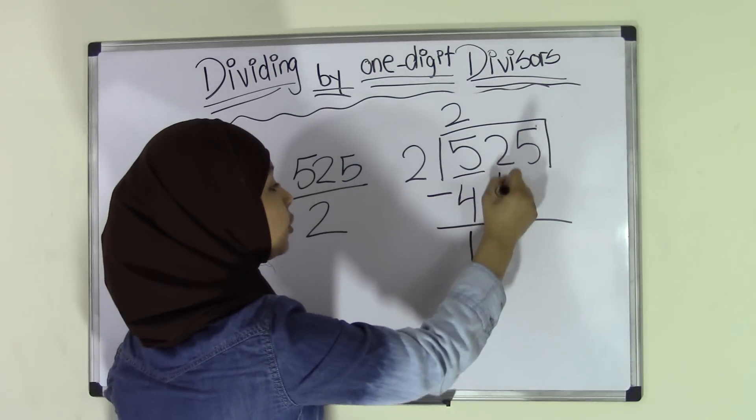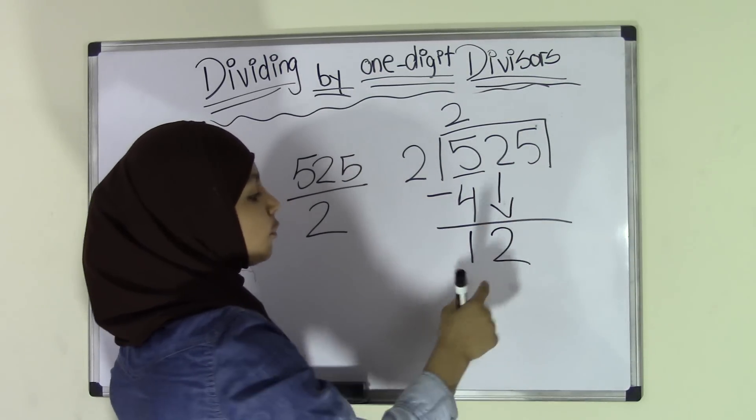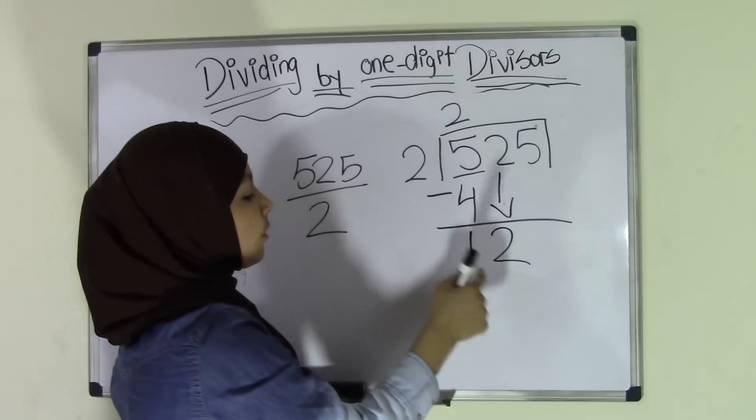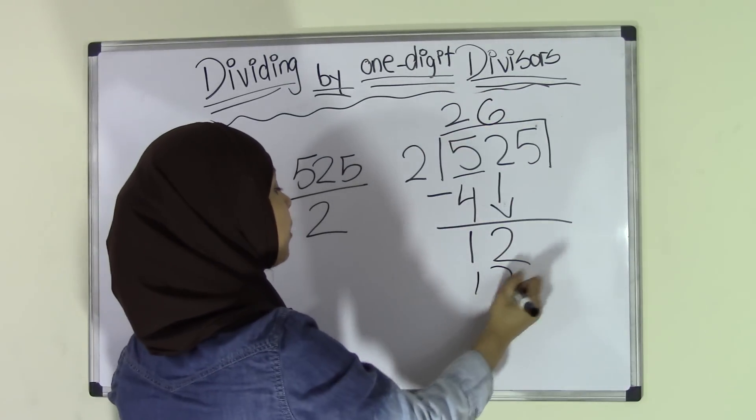And then we're going to bring down the 2 here. So now we have 12. How many times does 2 go into 12? 6 times. So 2 times 6 is 12.